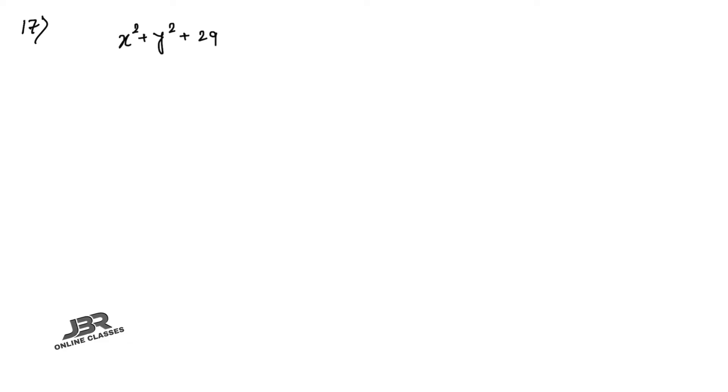In sum number 17: find the equation of a circle which passes through the origin and cuts off intercepts a and b on the coordinate axes. First, we write down the general equation of the circle: x² + y² + 2gx + 2fy + c = 0. Remember that general equation.